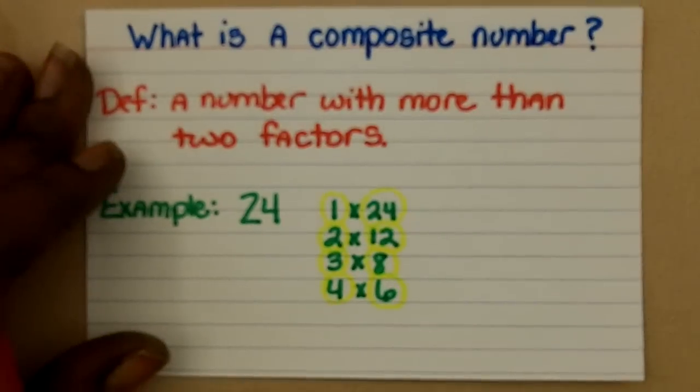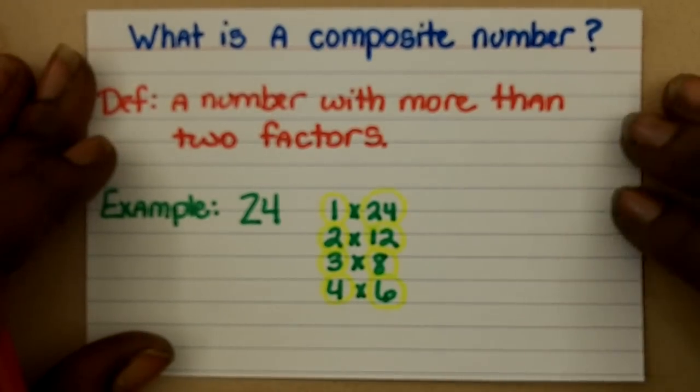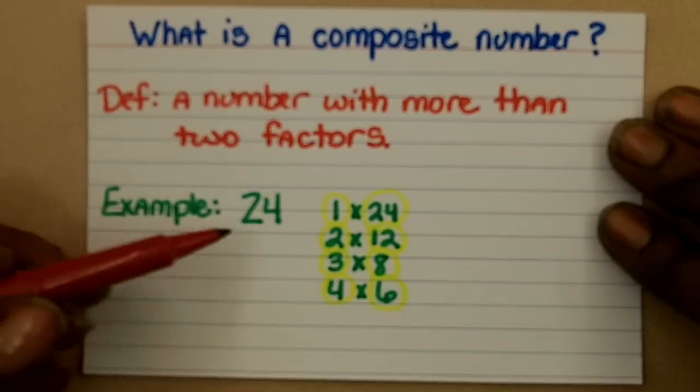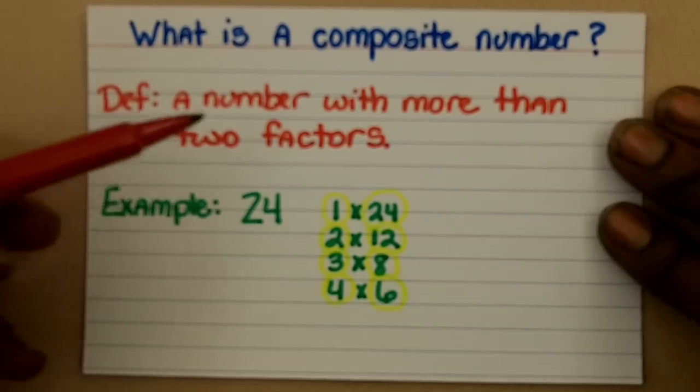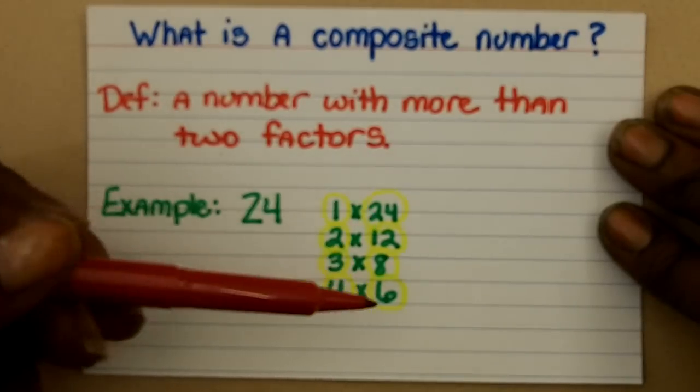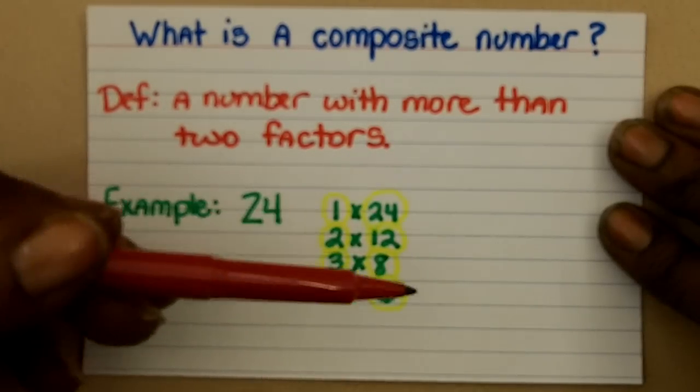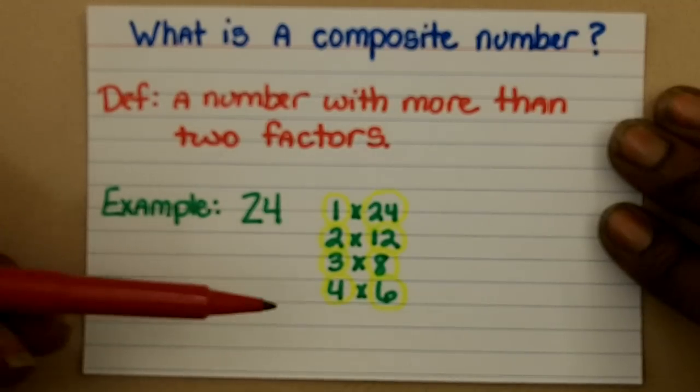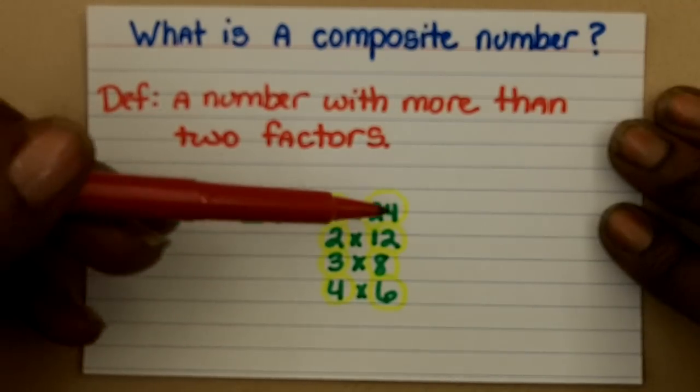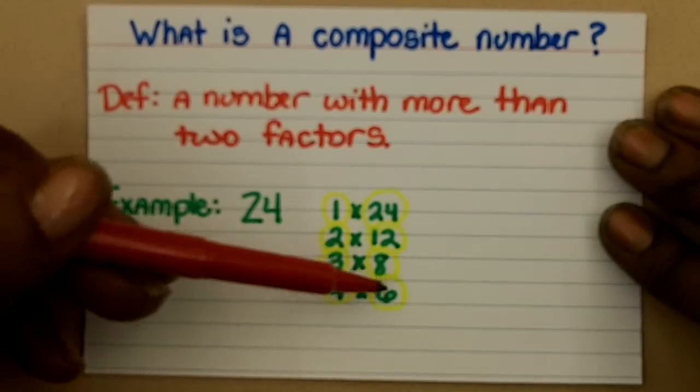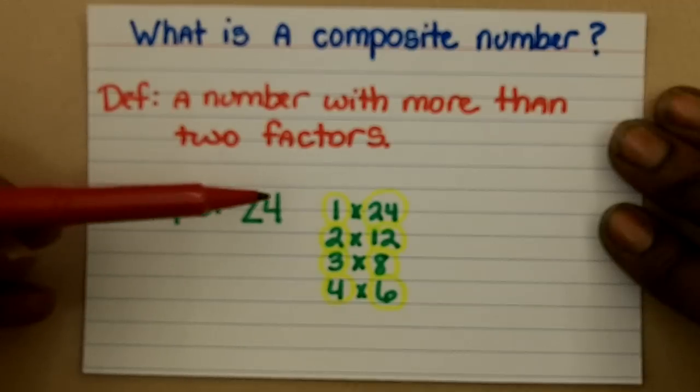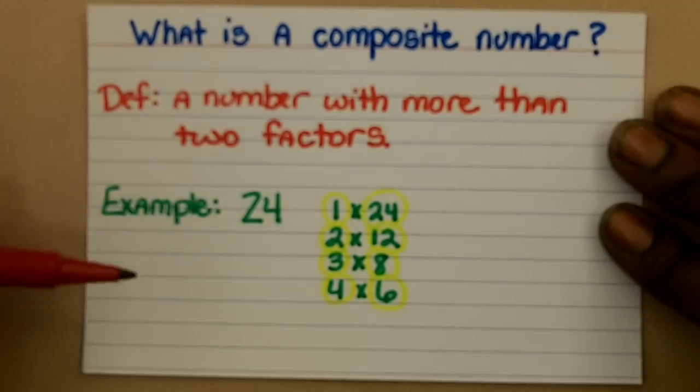And lastly, what is a composite number? Basically, by definition, a composite number is a number that will have more than two factors. For example, 24. If you list out all the factor pairs that when you multiply together you get 24, you'll see that there's 4 pairs, which means there are 8 factors of 24. The fact that there's more than 2 makes 24 a composite number.